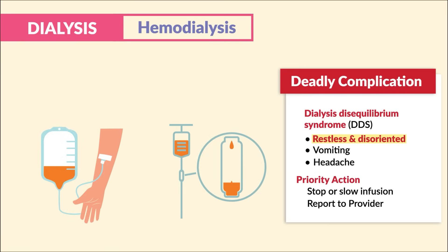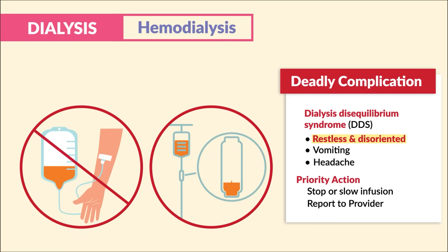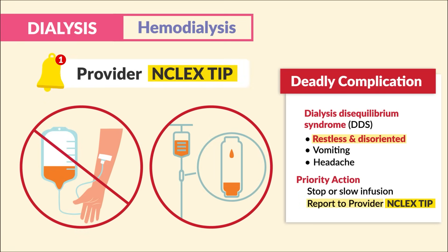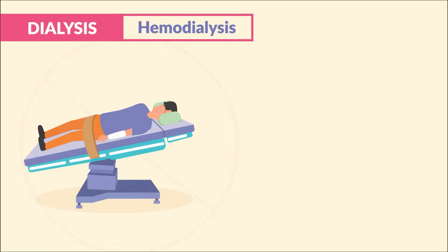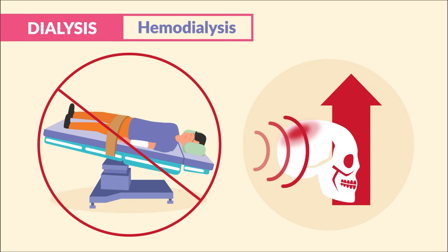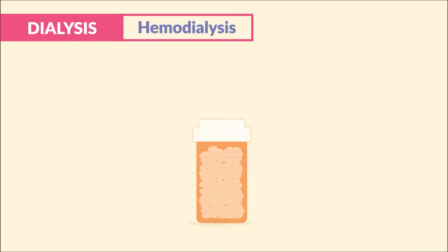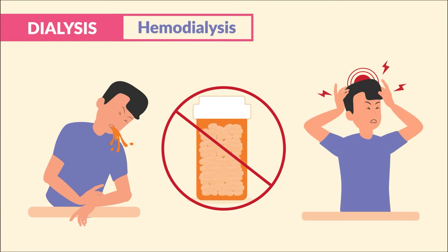The priority action is to stop or slow the infusion and report to the provider. Don't let the NCLEX trick you here — we do not place the client in Trendelenburg, as it can increase pressure in the brain, making that ICP worse. Many students get this wrong. We do not give medications to stop the vomiting or even the headache.